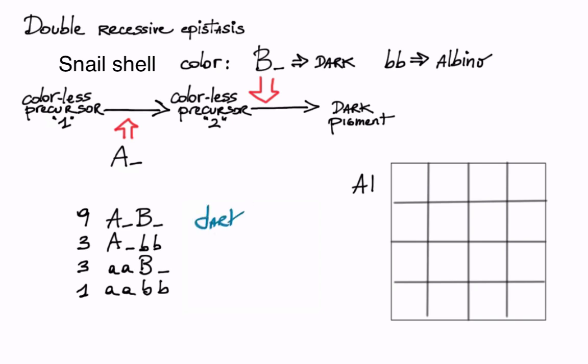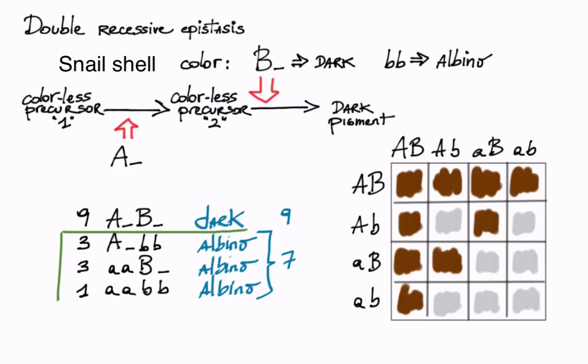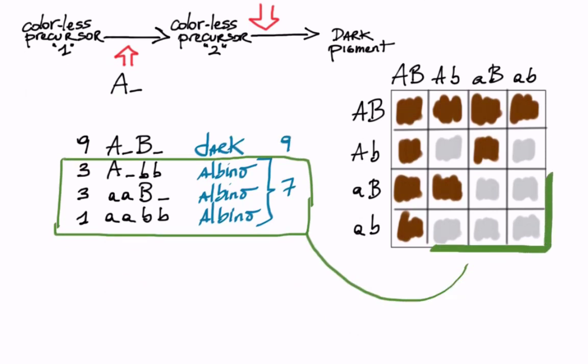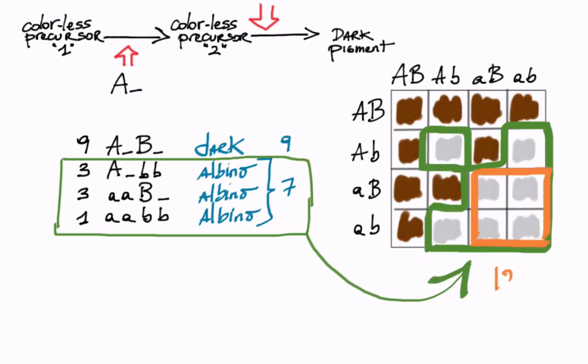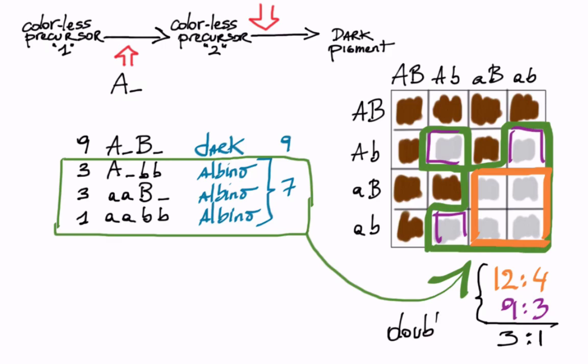The F2 progenies display two phenotypes, dark and albino, in the 9 to 7 ratio. Looking at this in the Punnett square, we mark as dark the squares where both big A and big B are present. The rest are albino. The albino F2s are laid out in an unusual pattern. This, however, makes sense. The four squares marked in orange represent the 4 out of 16. If we now exclude these, the remaining three albino squares are 3 out of 12. Therefore, a 3 to 1 ratio is displayed twice, as one may expect in a double recessive situation.